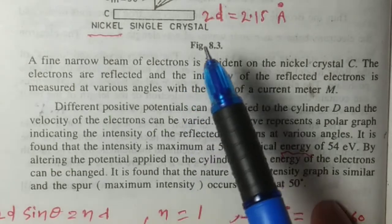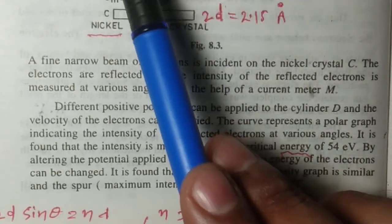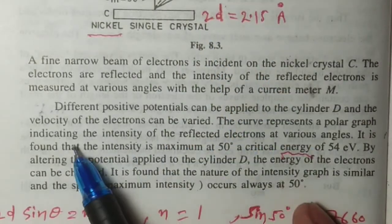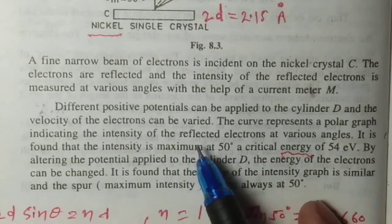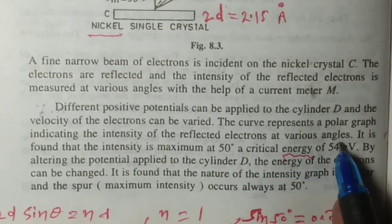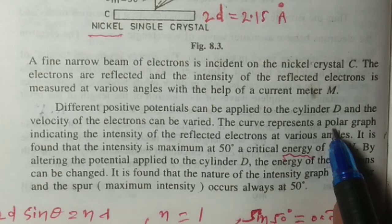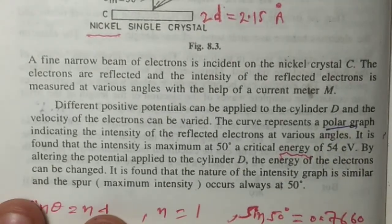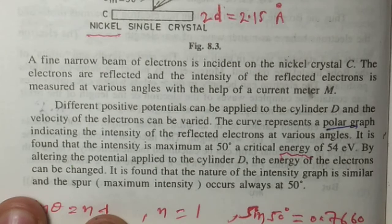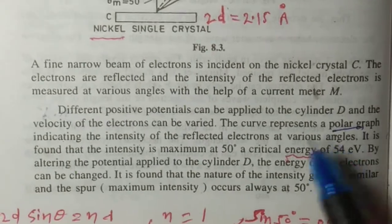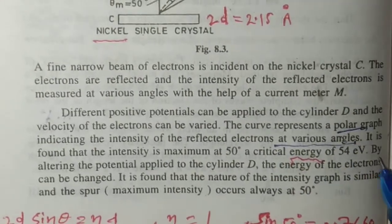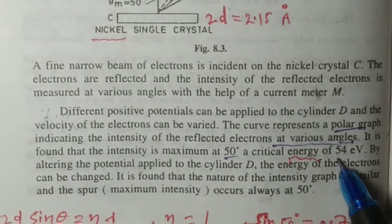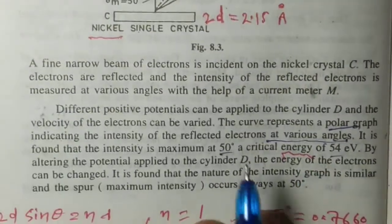Different positive potentials can be applied to cylinder D and the velocity of electrons can be varied. The curve represents a polar graph indicating the intensity of reflected electrons at various angles theta.